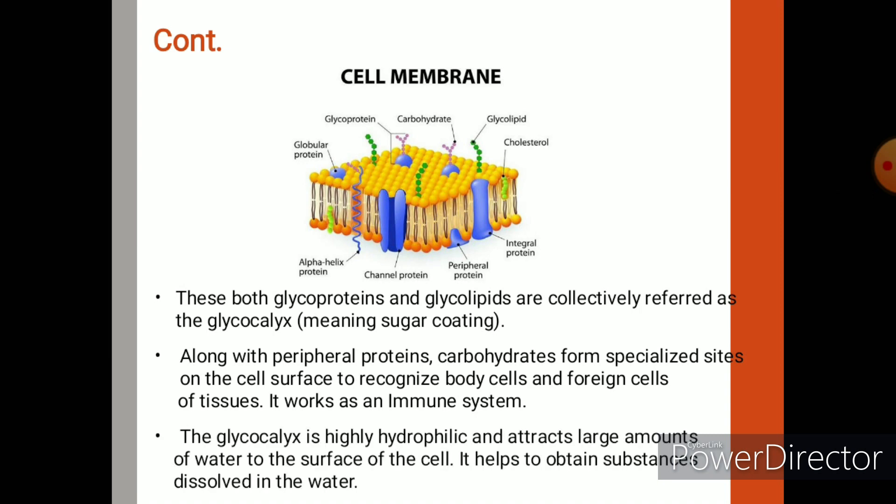Because glycocalyx is highly hydrophilic, substances dissolved in water are also highly absorbed. Along with peripheral proteins, carbohydrates form specialized sites on the cell surface to recognize body cells and foreign cells of tissues. So it works as part of the immune system.